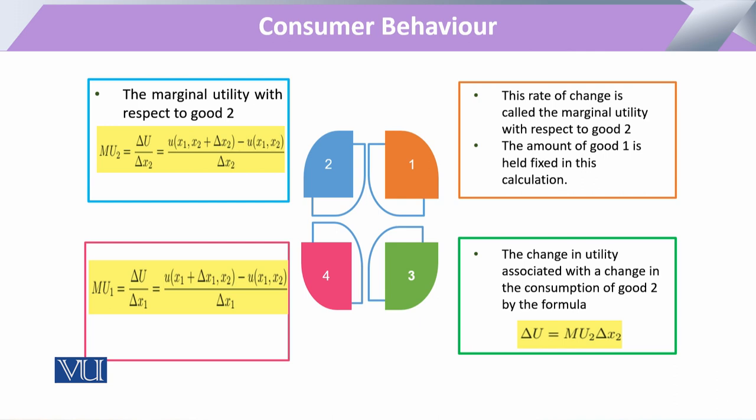At this point, we are not going to change the commodity on the y-axis, so marginal utility is measured keeping the other commodity constant. The marginal utility with respect to good 2 is the change in utility associated with the change in the consumption of that good, and the same formula is utilized.